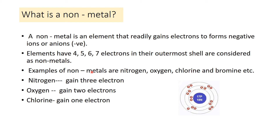Examples of non-metals include nitrogen, oxygen, chlorine, and bromine. Nitrogen is an inert gas and does not react easily. Oxygen is the gas we breathe in. Chlorine is also a gas. Bromine is also a non-metal.